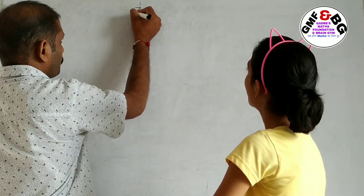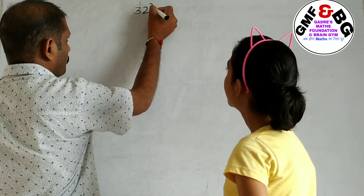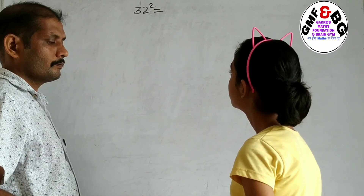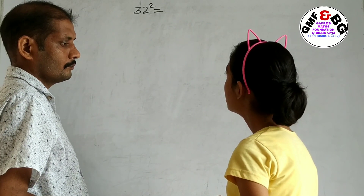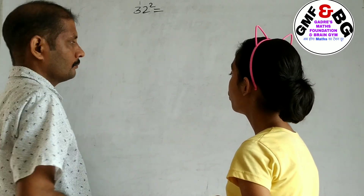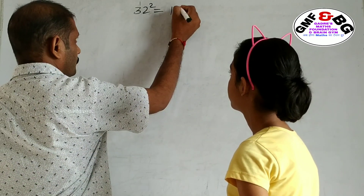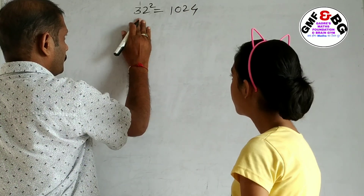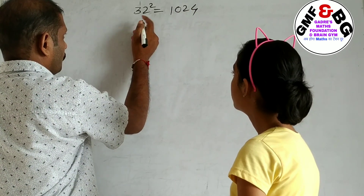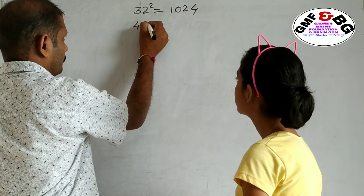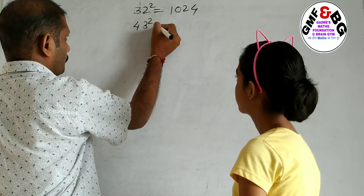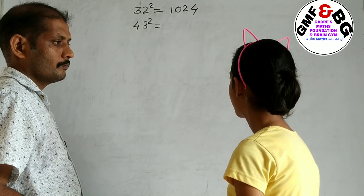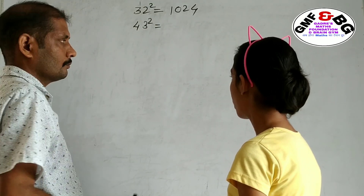42 squared equals 1024. Next: 43 squared equals 1849.